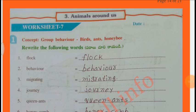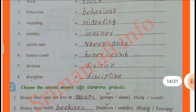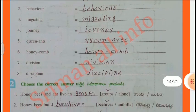Worksheet No. 7: Concept - Group Behavior: Birds, Ants, Honey Bee. Read the following words: Flock, Behavior, Migrating, Journey, Queen Ants, Honeycomb, Division, Discipline.